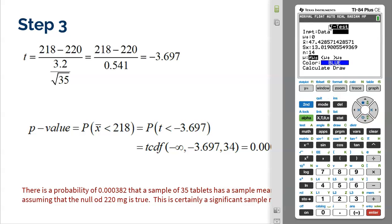Now, it's going to ask the data. So if we actually have the amount of caffeine in every one of those 35 pills, we could put into the calculator and do that. But we actually have the statistics, the mean and standard deviation from our sample. So we're going to select stats.